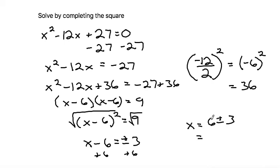We can separate that into two solutions. 6 plus 3 would be one solution, and 6 minus 3 would be the other, which gives us 9 and 3. So our two solutions are 9 and 3.